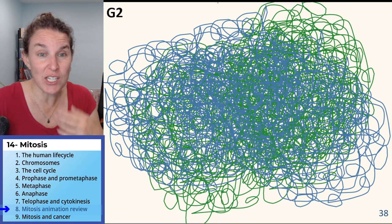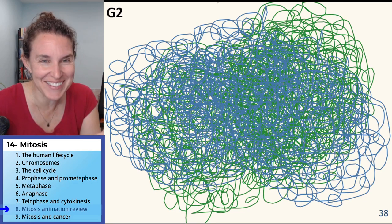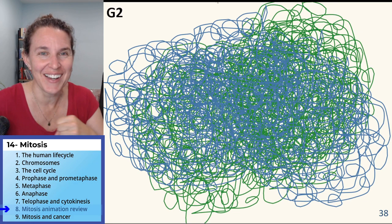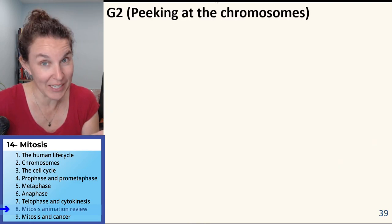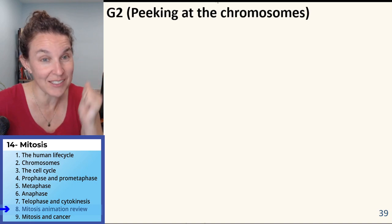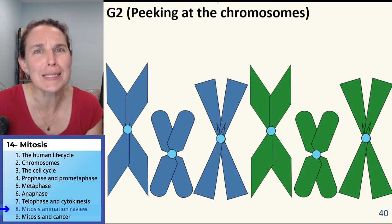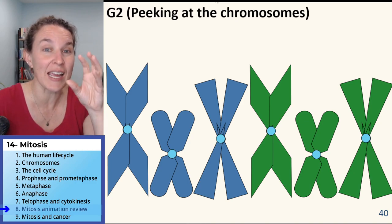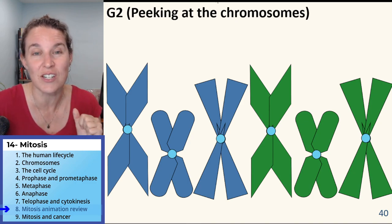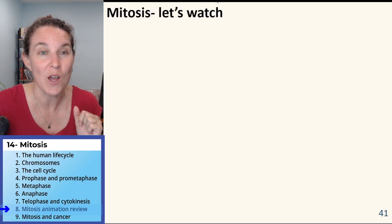But in G2, this is what it looks like. If we were to peek at the chromosomes, predict what's it going to look like. The same as it did at the end of S. We just have doubled our DNA and all the sisters are attached at centromeres.